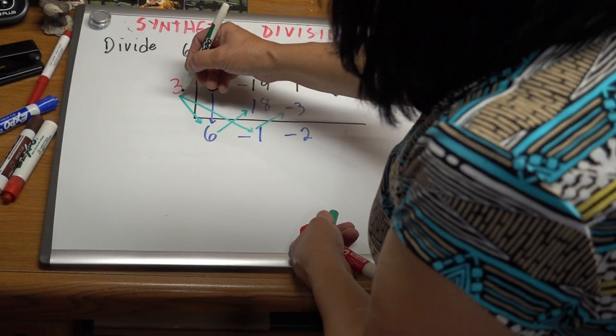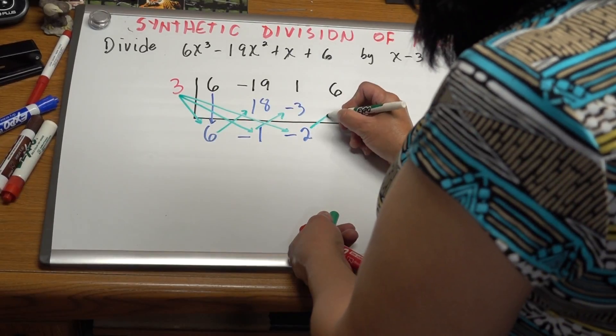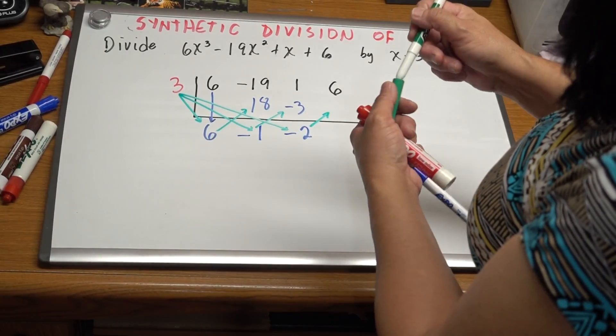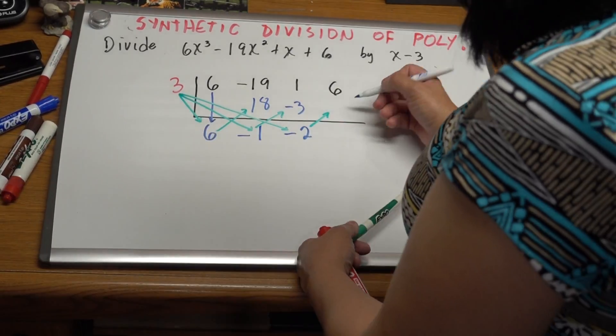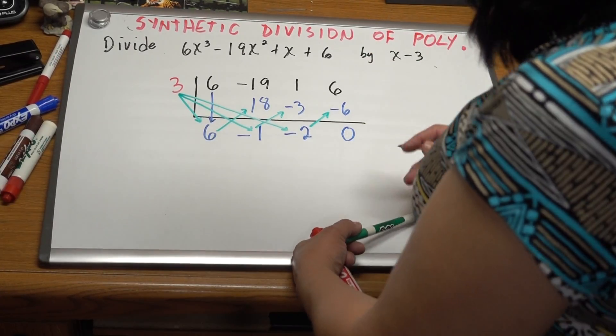Continue, repeat the process. 3 times -2 is -6. Put the answer right there, -6. Then you add, and this becomes 0.